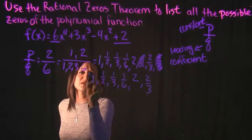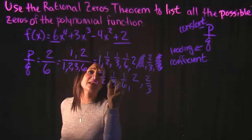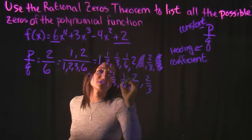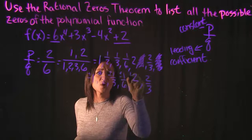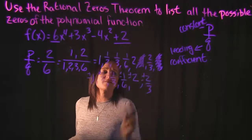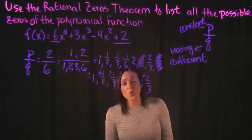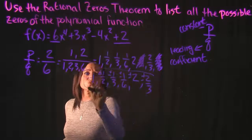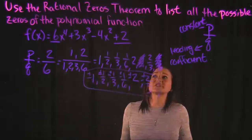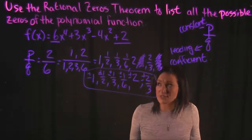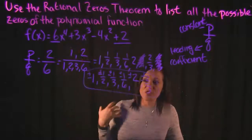And it's going to be the positive and the negative variations of each one of these. So it's plus or minus 1, plus or minus 1/2, plus or minus 1/3, and so on. So this list right over here represents all the possible zeros of the function that we have.